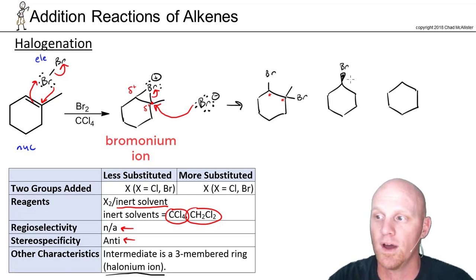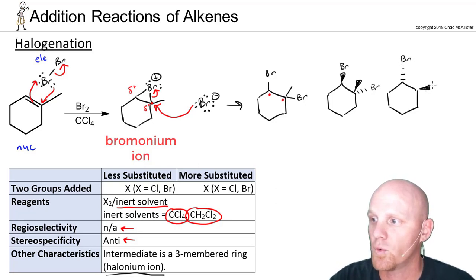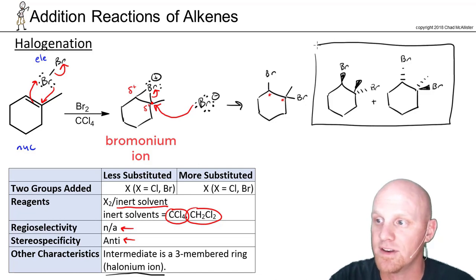In this case, one bromine could be on a wedge, and then for anti-addition, the other one would have to be added on a dash. That means the methyl group is on a wedge on that carbon there. The alternative is putting this bromine on the dash, and the other one on the wedge, which means the methyl group is on a dash as well. These are your two products, how they would properly draw. They're a pair of enantiomers.